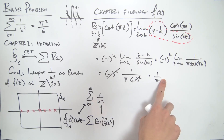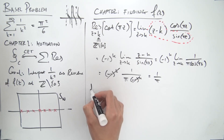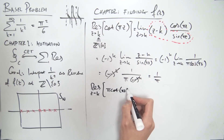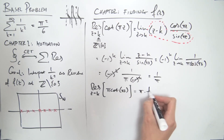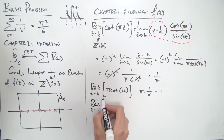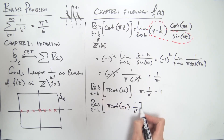The residue of cot(πz) at integer k is 1/π. Ideally we want a residue of 1, because then for a simple pole, if we multiply another function by cot(πz), the residue will be that function evaluated at the pole. To fix this, multiply by π: the residue of π·cot(πz) at z = k is 1. Now consider f(z) = π·cot(πz)·(1/z²).